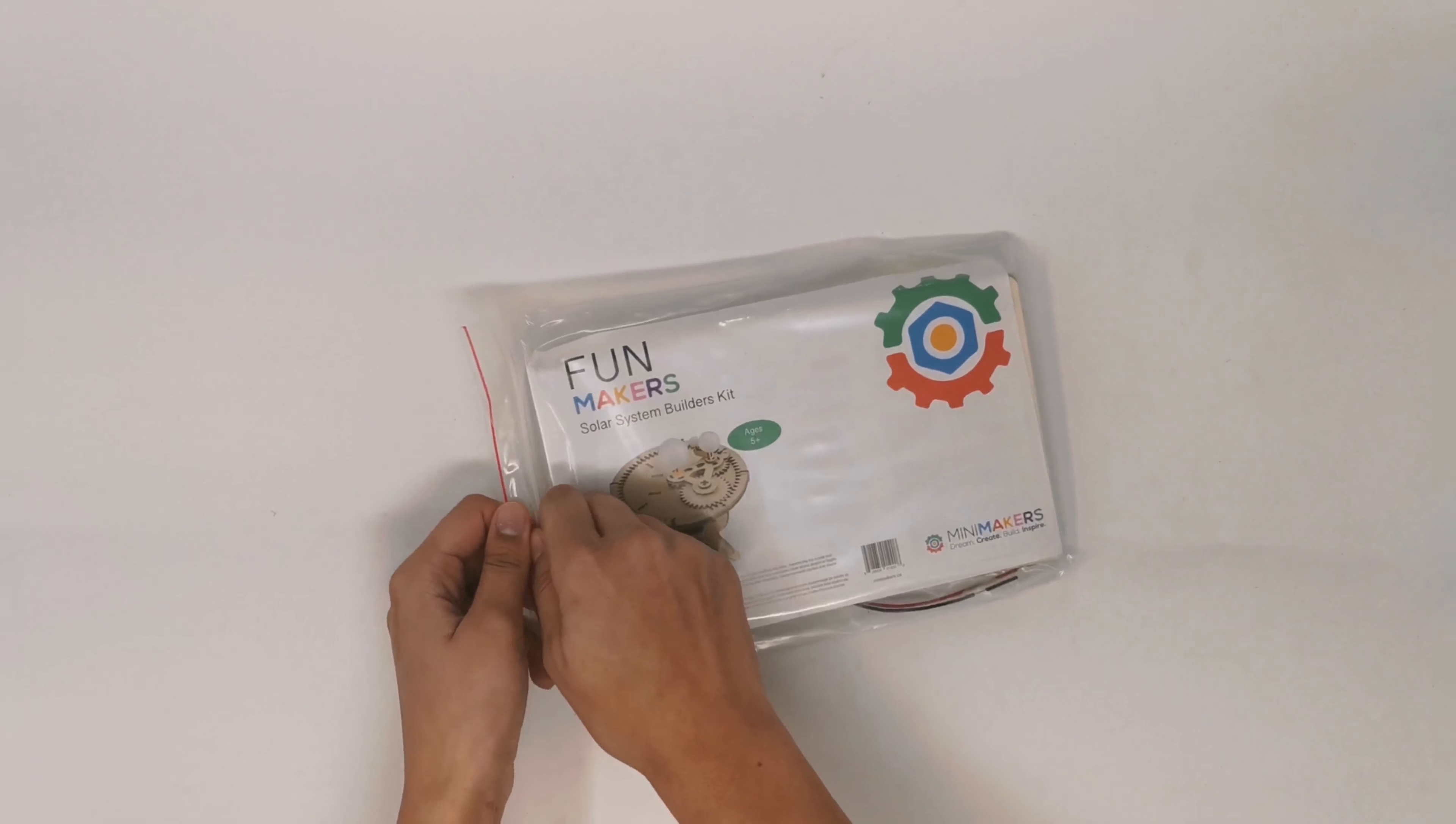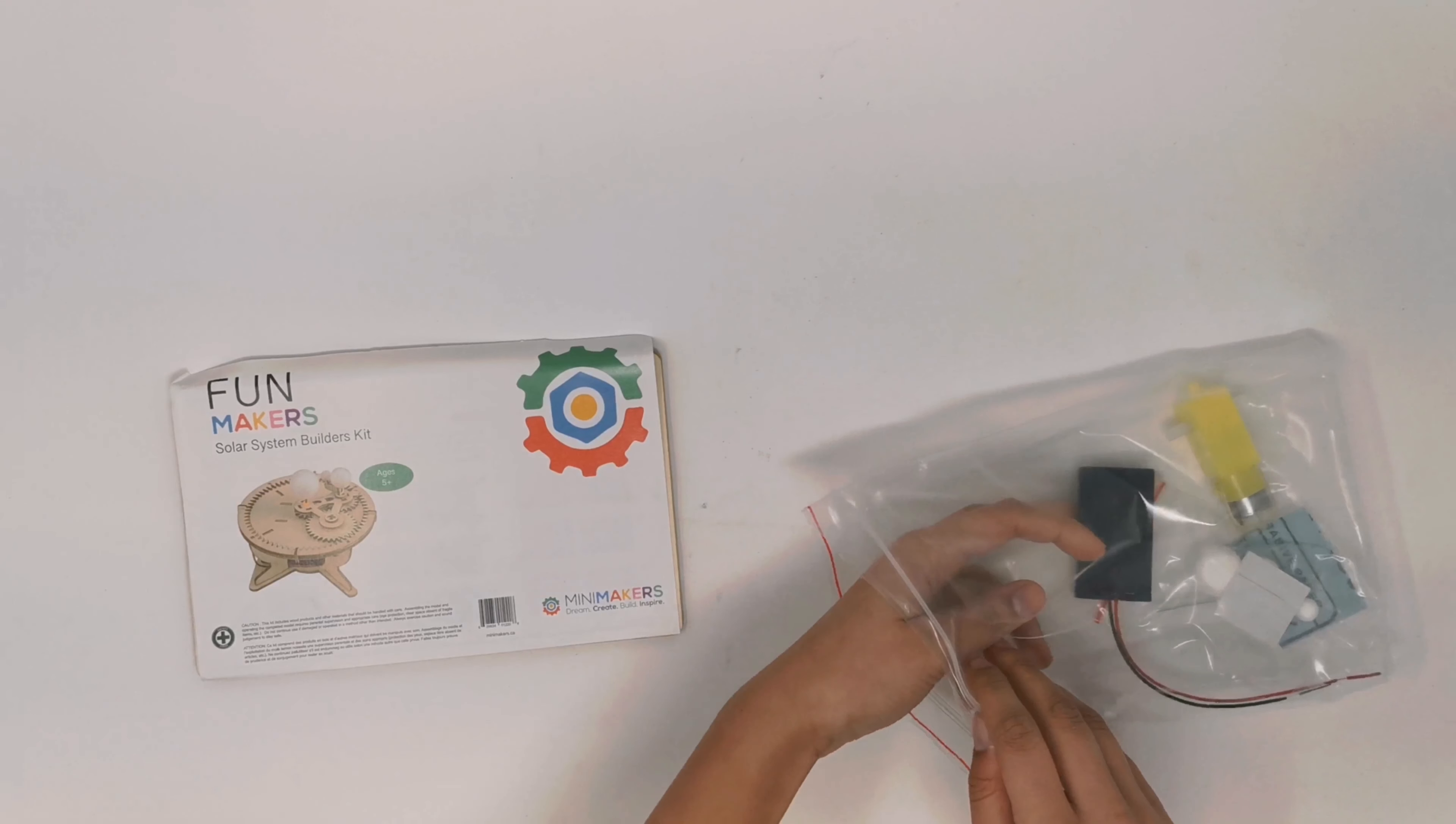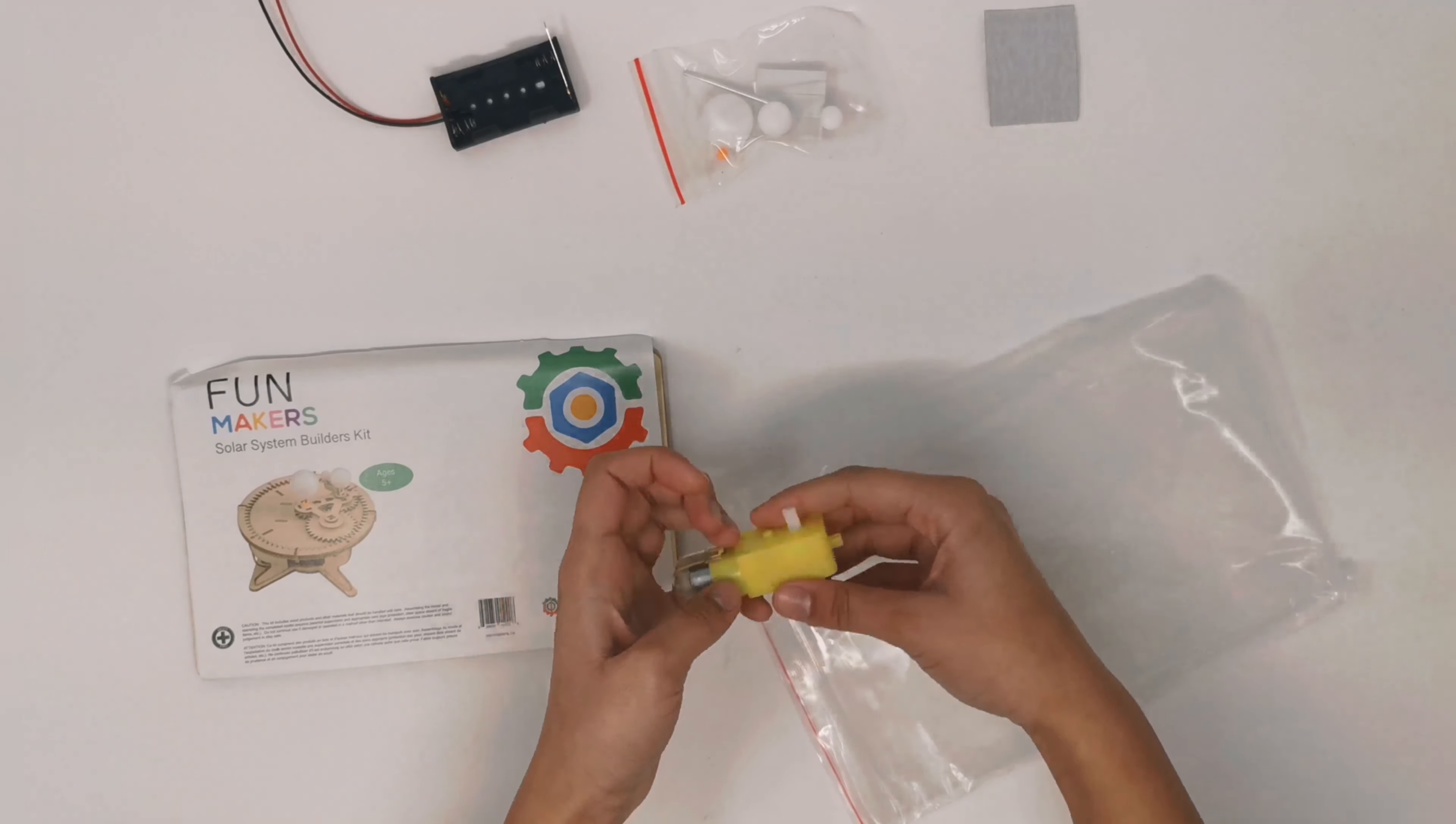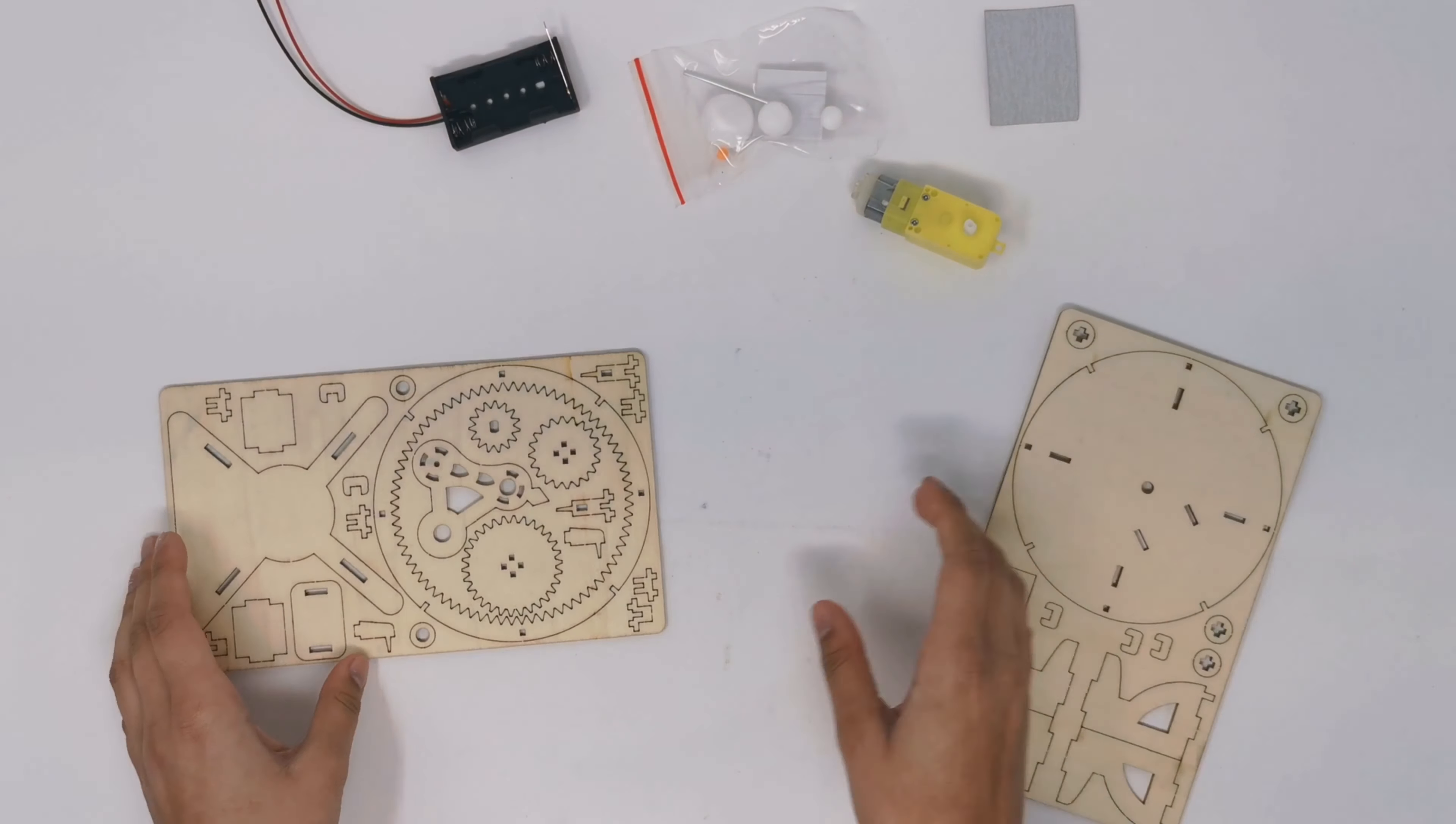So first for a solar system kit, you are going to want to open up your bag and lay out all your pieces. For this kit, you should have a battery pack, a small baggie with different parts, double-sided tape, sandpaper, your motor, and two wooden pieces.